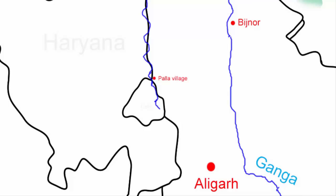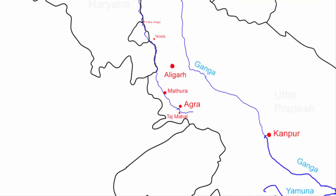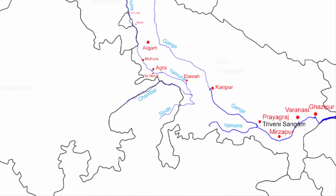The river heads towards Noida in Uttar Pradesh and continues along the Uttar Pradesh and Haryana border in the southeastern direction, reaching Mathura and then Agra — where the Taj Mahal stands on the western side of Yamuna. In the Etawah district of Uttar Pradesh, river Chambal meets the Yamuna — Chambal being one of its major tributaries. About 10 kilometers further, the river Sindh also meets the Yamuna.